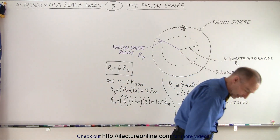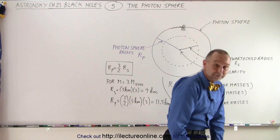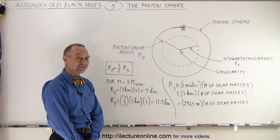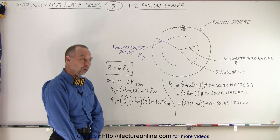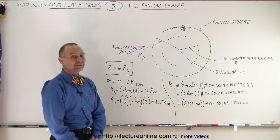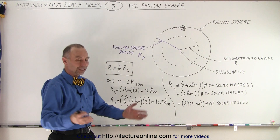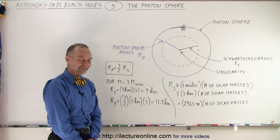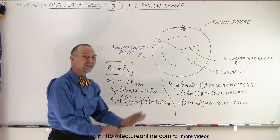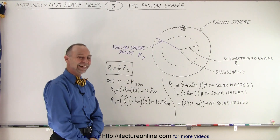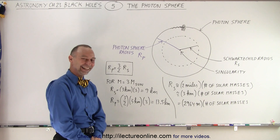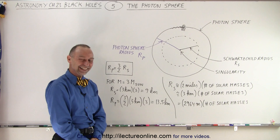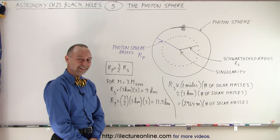A black hole just sits there — it is absolutely nothing visible. So how do you know it exists? Only if there are other objects going around it. If there are no other objects going around it, you would never even know it's there. There could be one lurking in your backyard and you wouldn't know it — your cosmic backyard, that is.